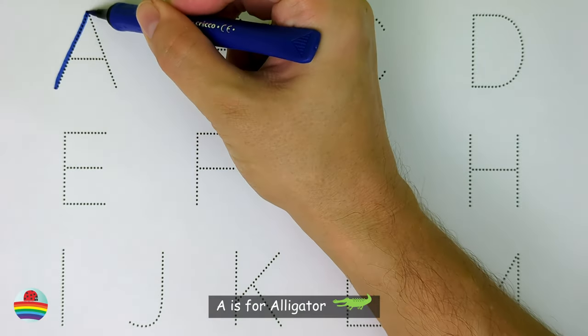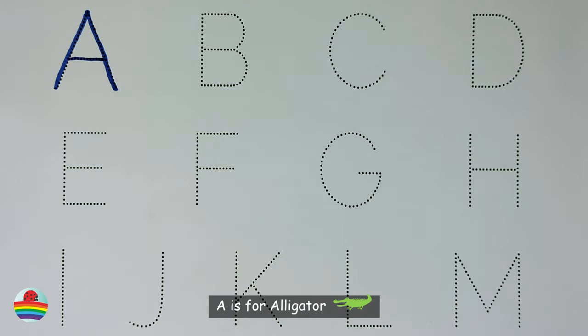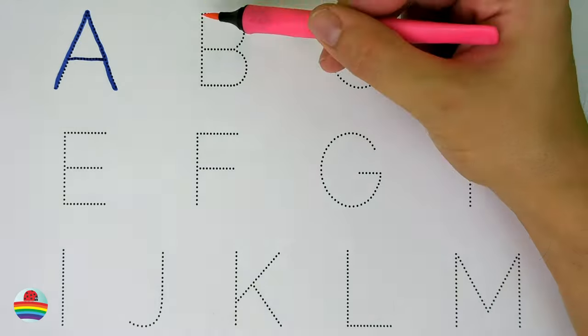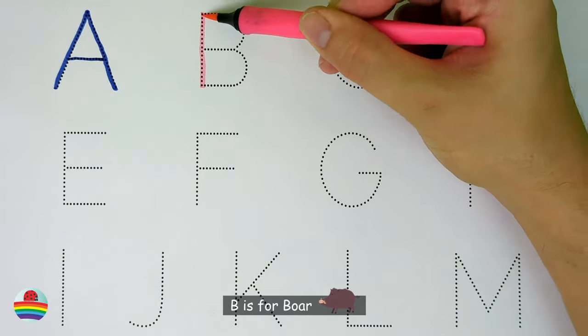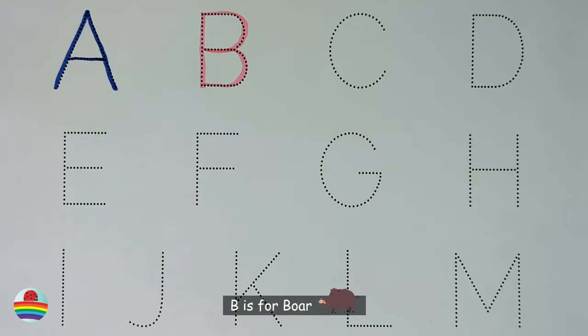A. A is for alligator. A. B. B is for boar. B.